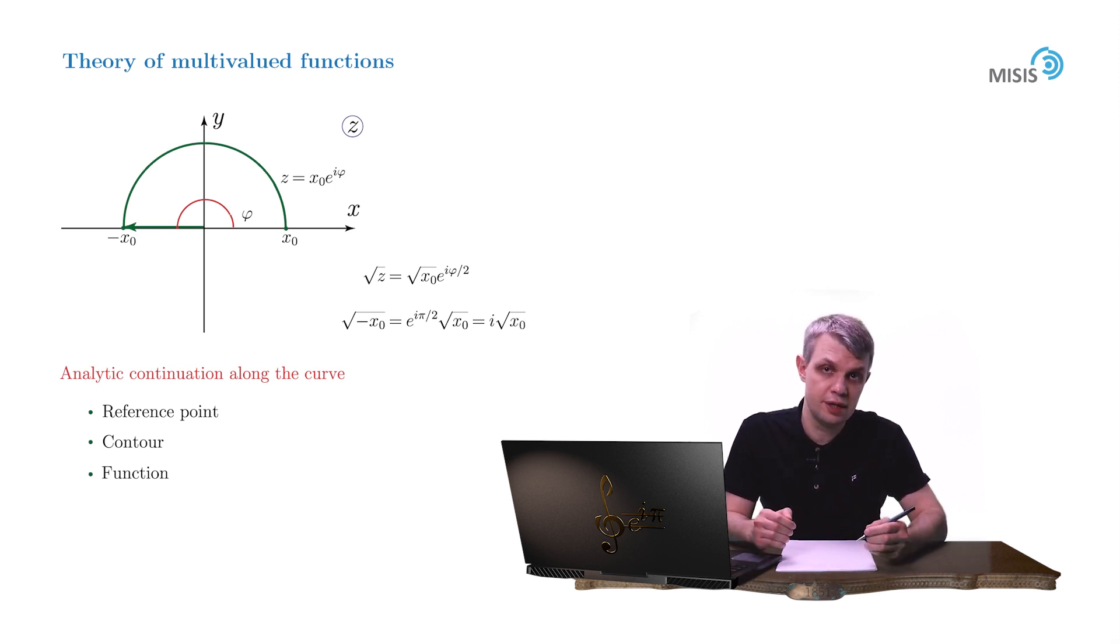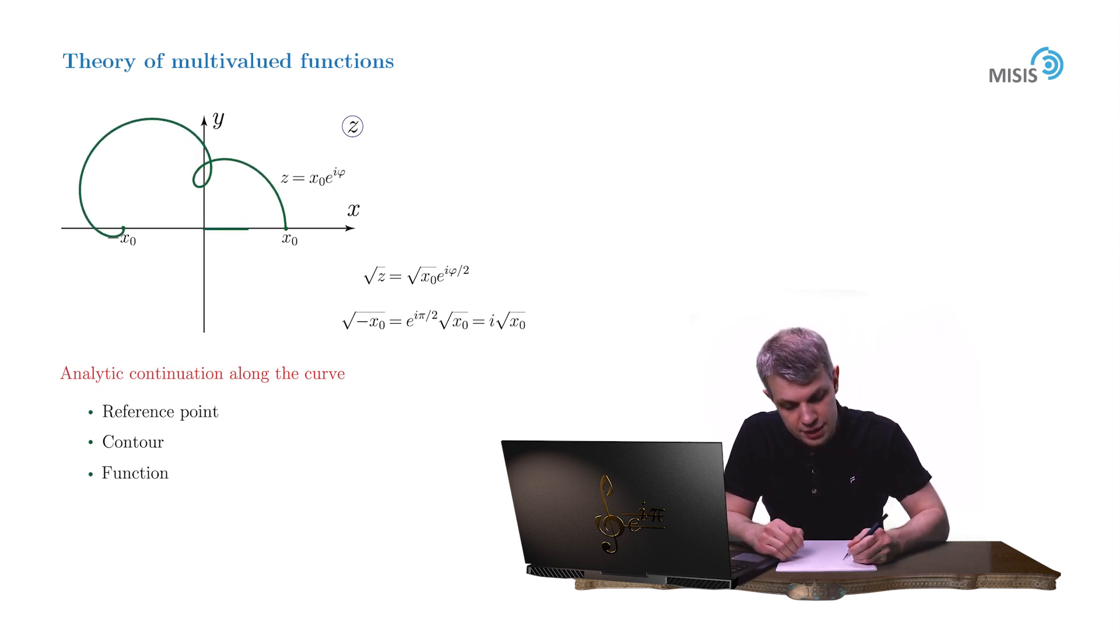But what if we want to get to the same point, but along a different path, say a slightly different curve in the upper complex semi-plane? Well, the change of the argument is the same, and it doesn't seem to depend on the shape of the contour,